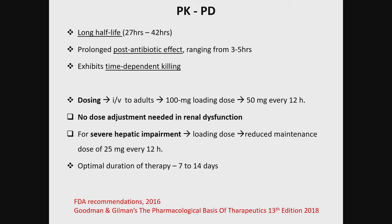Coming to the PK/PD of tigecycline: it has a long half-life ranging from 27 to 42 hours, a post-antibiotic effect, and it exhibits time-dependent killing. Adult doses are 100 mg loading dose followed by 50 mg every 12 hours. No dose adjustment is required for renal impairment, but in severe hepatic impairment, the maintenance dose is reduced from 50 to 25 mg per 12 hours. Optimal duration of therapy is 7 to 14 days.